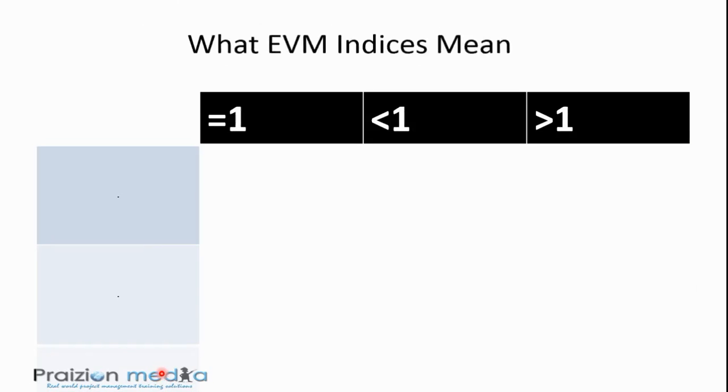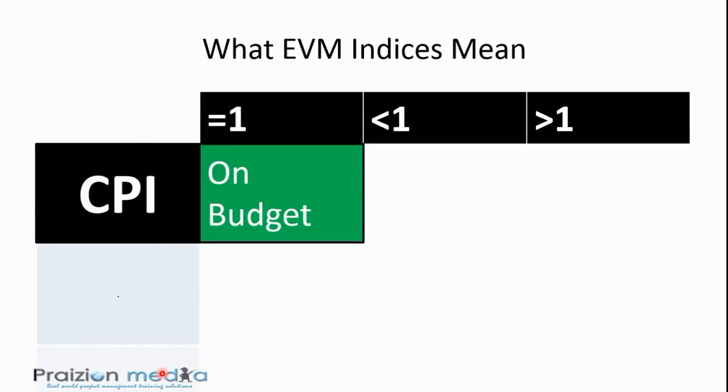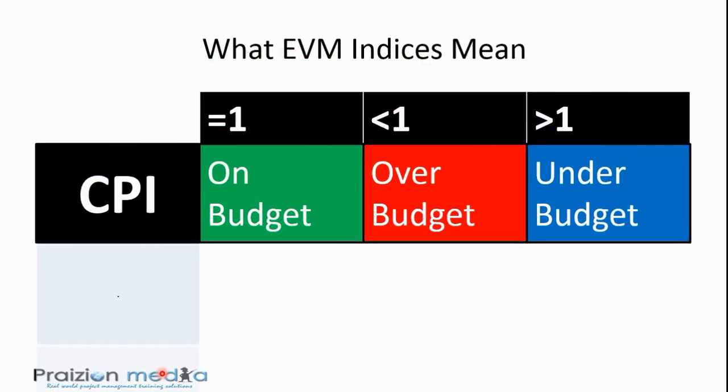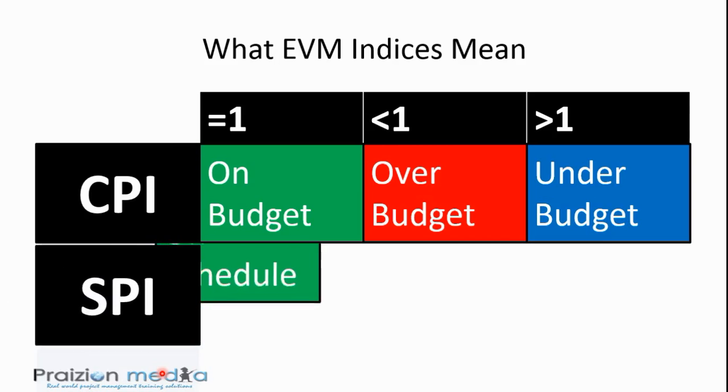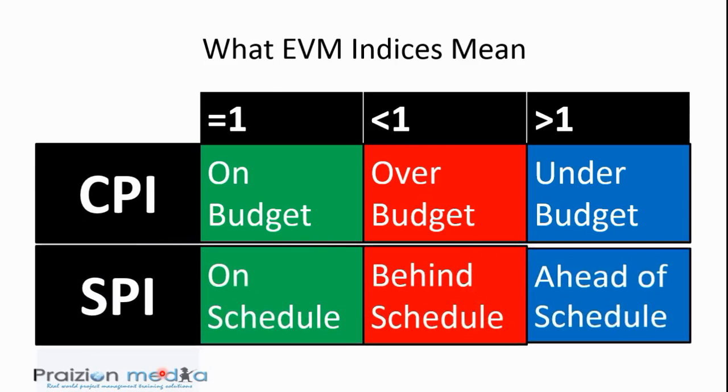Now, in the case of the indices, we take a look at cost performance index, equal to 1, right on budget, less than 1, over budget, and greater than 1, under budget. If you look at schedule performance index, equal to 1, on schedule, less than 1, behind schedule, and greater than 1, ahead of schedule. Again, the direction of these could be looked at as arrows. They map directly to that for schedule performance index, but for cost performance index, it seems to be skewed the other way around. So, just bear that in mind.